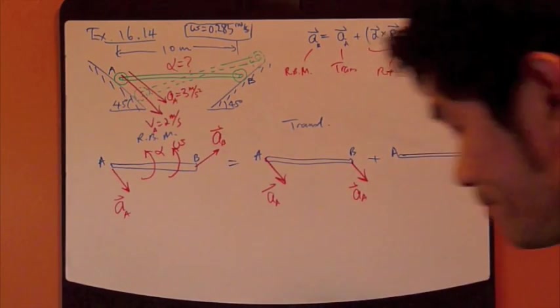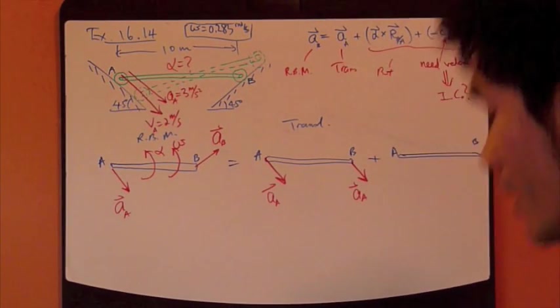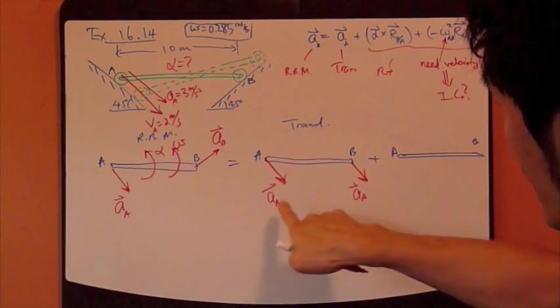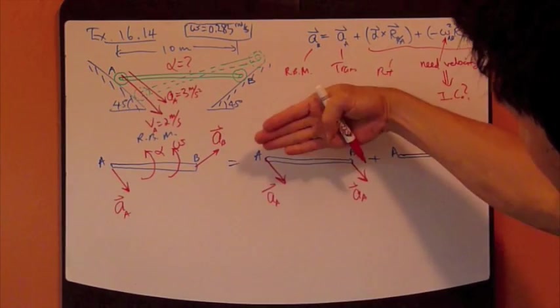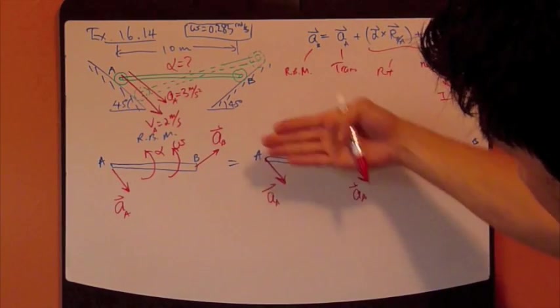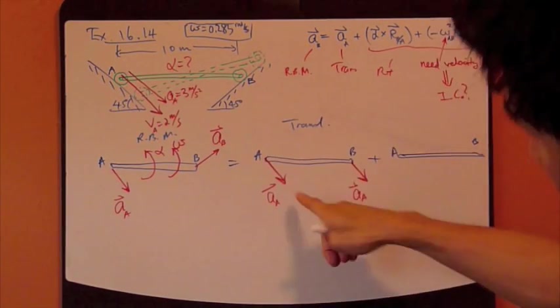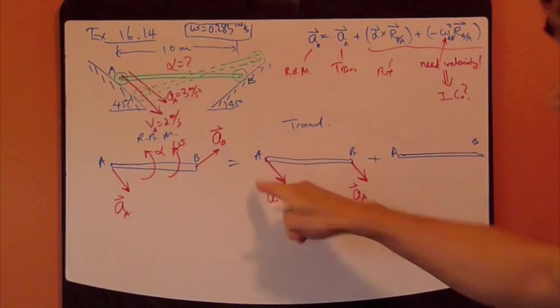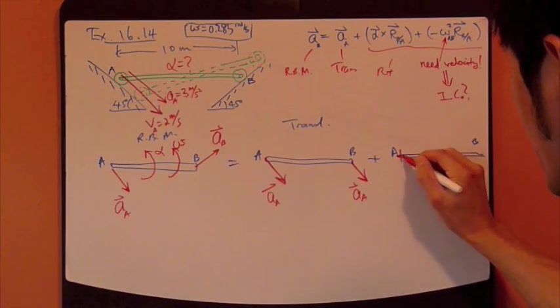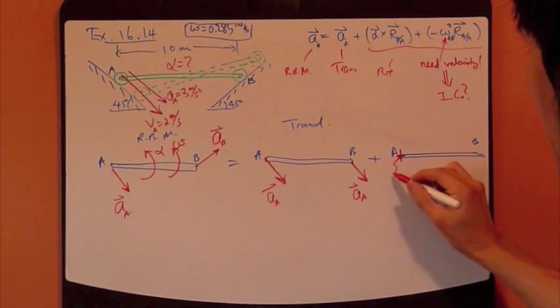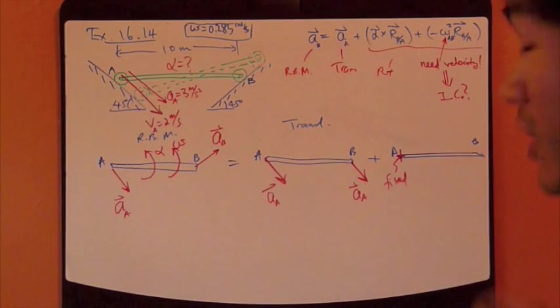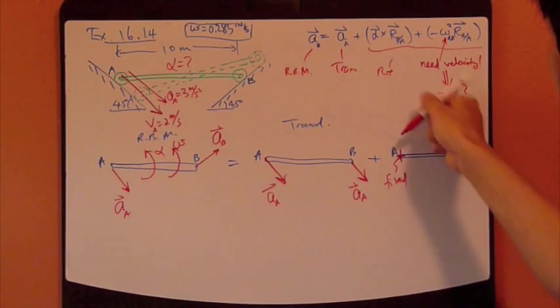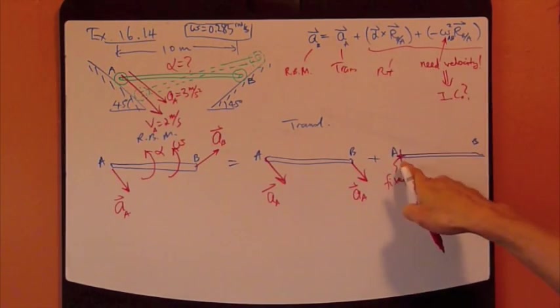So for the pure rotation part, since for the translation I've used point A as the reference, right, so the whole thing is translating at AA. So I'm going to use point A as the fixed point now. So this is as if A is fixed, and as if this whole thing is rotating about point A.